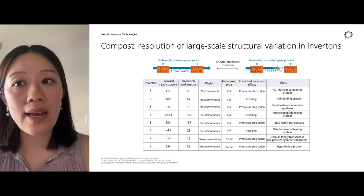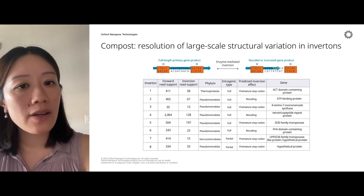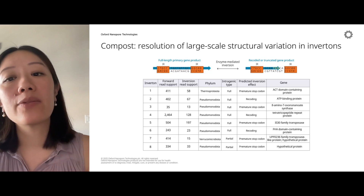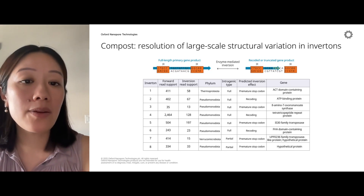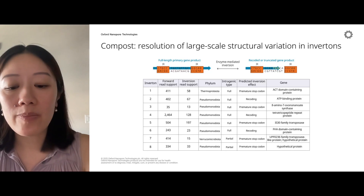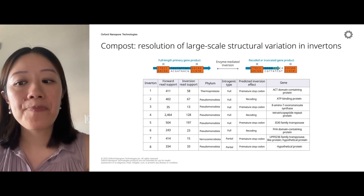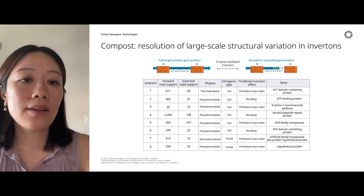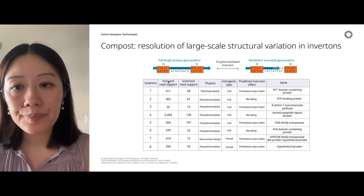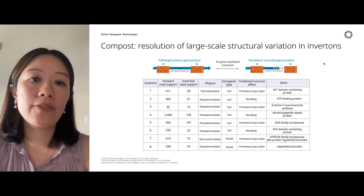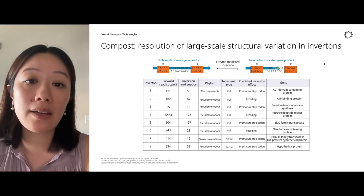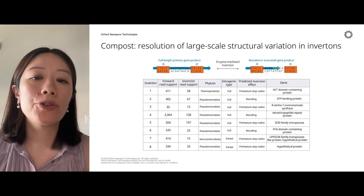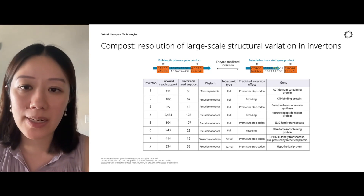Another exciting result is that we were able to find invertons — sequences between inverted repeats that can be inverted by enzymes. It was recently discovered that these can occur entirely within a gene, meaning a single protein-coding gene can have two different switchable forms in response to environmental stimuli. We found eight high-confidence invertons in our assembly, enabled by Oxford Nanopore reads that span these inverted repeats, which pose a challenge for shorter reads.